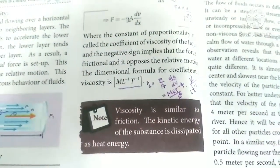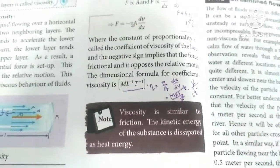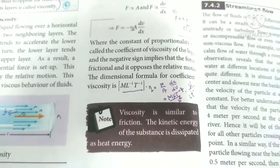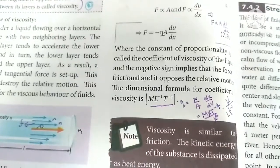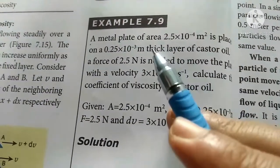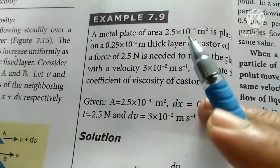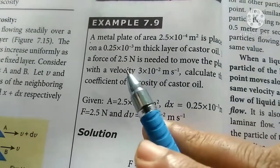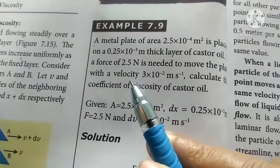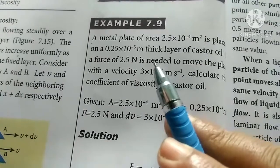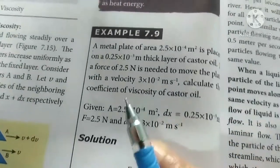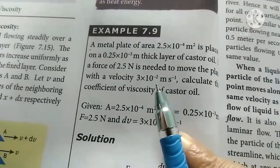At this point, viscosity is the friction between the two solid surfaces. The kinetic energy is dissipated in the form of heat. Now our next example problem 7.9: A metal plate of area 2.5 × 10⁻⁴ m² is placed on a 0.25 × 10⁻³ m thick layer of castor oil. If a force of 2.5 N is needed to move the plate with a velocity of 3 × 10⁻² m/s, calculate the coefficient of viscosity of castor oil.